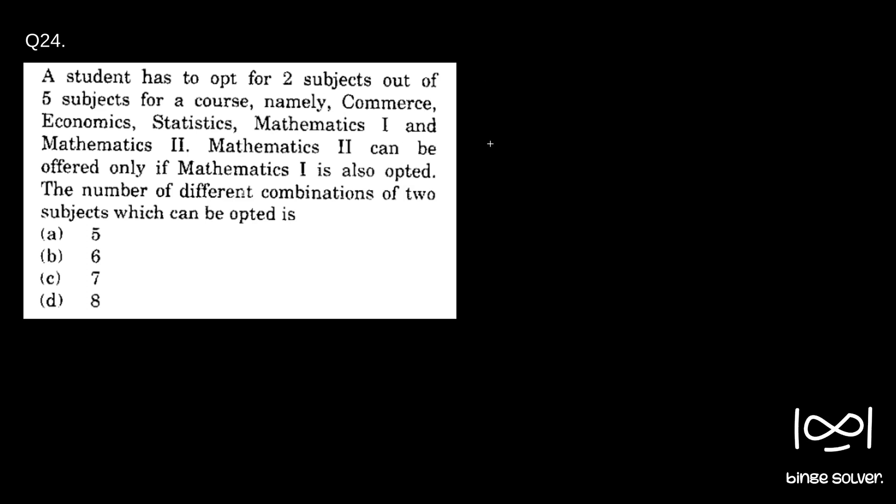This is a question where we can use the combination formula. We need to choose 2 subjects from 5 subjects, so that is 5C2. To calculate 5C2: 5×4 divided by 2×1, which equals 10.